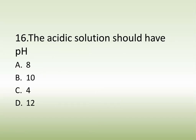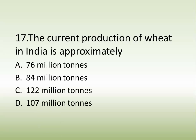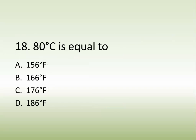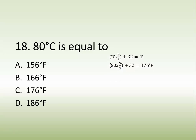Question number sixteen: an acidic solution should have a pH of. Options are: 8, 10, 4, or 12. The correct answer is 4. Question number seventeen: the current production of wheat in India is approximately. Options are: 76 million tons, 84 million tons, 122 million tons, or 107 million tons. The correct answer is 107 million tons. Question number eighteen: 80 degrees Celsius is equal to — using the conversion formula, the answer is 176 degrees Fahrenheit.